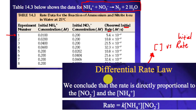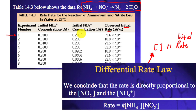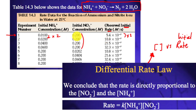This is important because we're going to look at another type called integrated rate laws, which look at different things — not concentration and rate. In experiment two, the nitrate ion concentrations are kept constant — that's the isolation method. By keeping one constant, we can see that when the ammonium ion concentration doubles, the rate doubles as well. That pattern holds in the next experiment too.